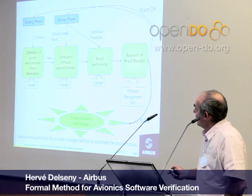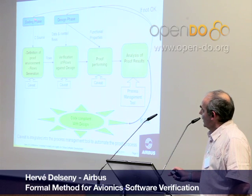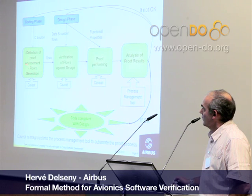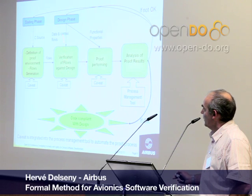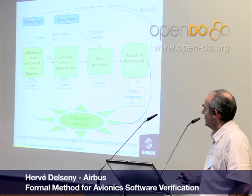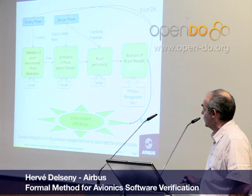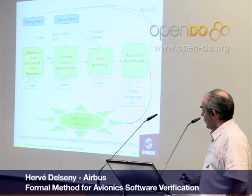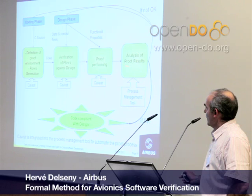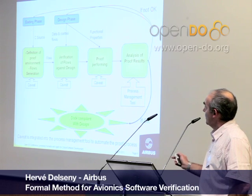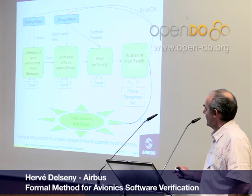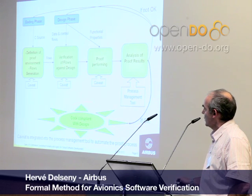The proof is done like that. Caveat uses the C source to extract the data and control flow. This flow is compared to the data and control flow of the design. Therefore, the functional properties in the design are verified against the C source code. The results are analyzed. If there is a problem, we go back to the coding phase or the design phase. And if not, the code is compliant with the design.